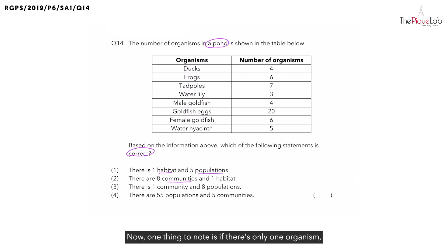Now, one thing to note is, if there's only one organism, can we call that a population? No, a single organism does not make a population.